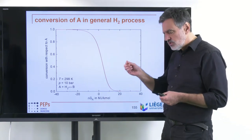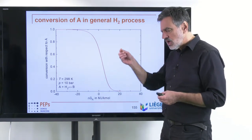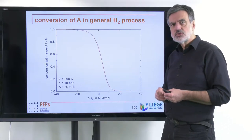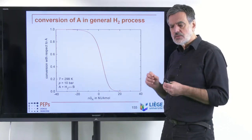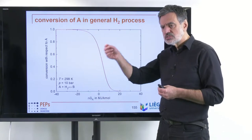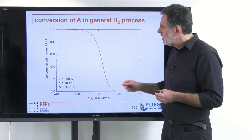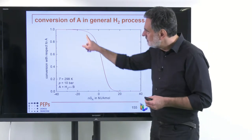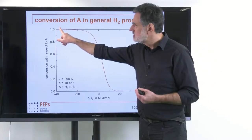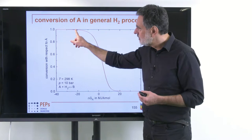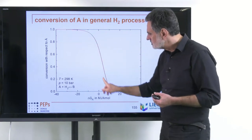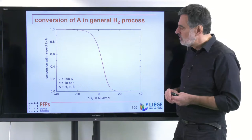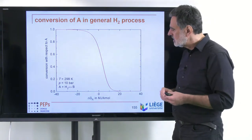So if the free energy after the reaction is higher than before, this gives positive values, which also means the chemical exergy after the reaction is higher than before. Then the conversion approaches zero. If it is negative, it approaches almost one — everything is converted — and there is a transition function connecting the two limiting cases.